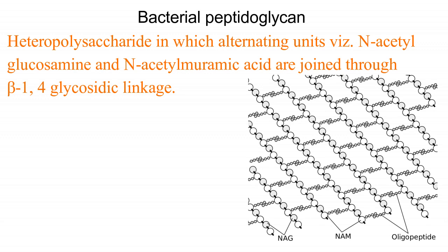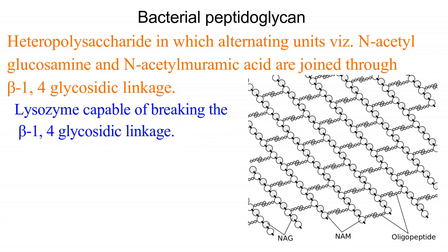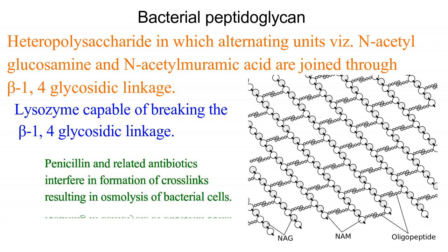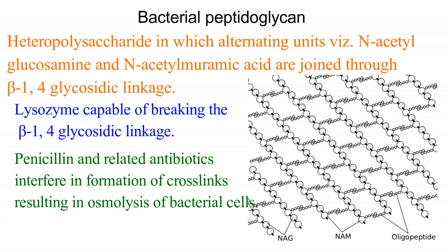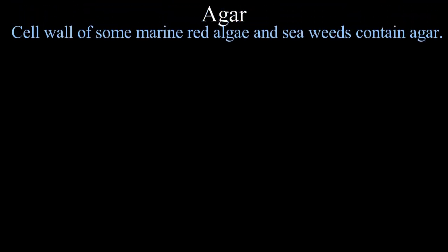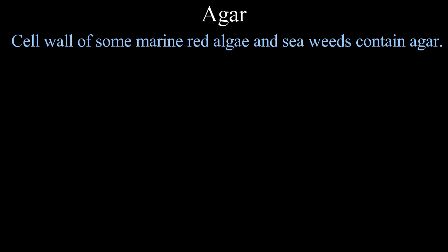Bacterial peptidoglycan: the bacterial cell wall contains a heteropolysaccharide in which alternating units of N-acetylglucosamine and N-acetylmuramic acid are joined through beta-1,4 glycosidic linkage. Lysozyme, present in bodily secretions and produced by some bacteriophages, is capable of breaking the beta-1,4 glycosidic linkage. Penicillin and related antibiotics interfere in formation of cross-links, resulting in osmolysis of bacterial cells.